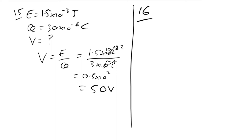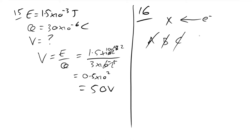Question 16: electric field acts into the plane of the paper; an electron enters at 90° to the field lines. Field lines show the direction of force on a positive charge, so the force on an electron is opposite to the field direction. It's not 90° as in a magnetic field. The answer is D.